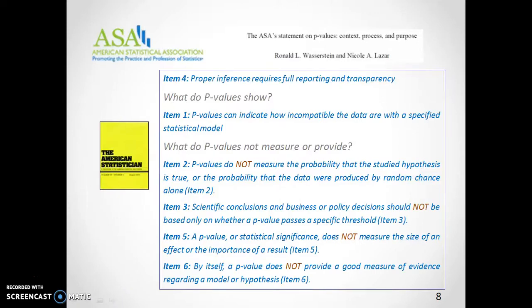In 2016, the ASA published a list of six formal statements about p-values. The fourth item states the importance of transparency. Proper inference requires full reporting and transparency. The first indicates what p-values show. It says p-values can indicate how incompatible the data are with a specified statistical model. We will explain it later through an example.